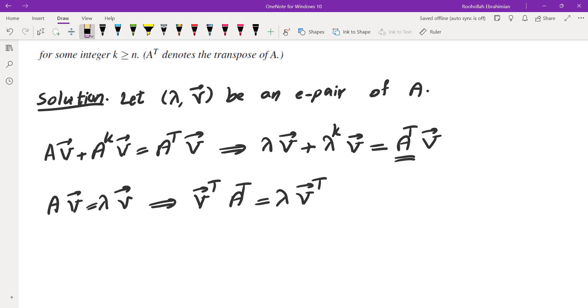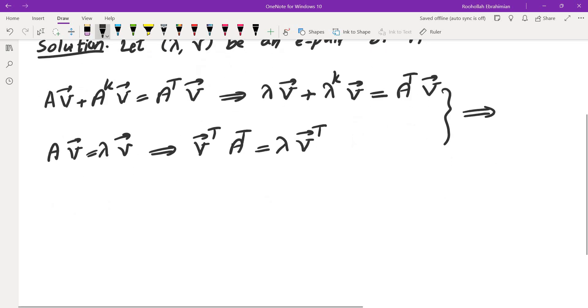If you take the transpose of both sides, you get V transpose A transpose equals lambda V transpose. So this is nice because if I multiply both sides by V transpose from the left, I would get V transpose lambda V plus lambda to the power of K V transpose V equals V transpose A transpose V.